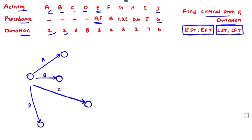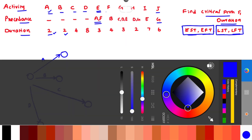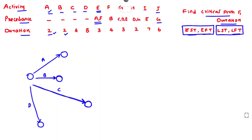Next, we draw activity E. Its precedence activities are A and F. First, we draw activity F — for F, activity B is the precedence activity — so we draw F coming from B. Then for activity E, both A and F are precedence activities, so E follows both A and F.